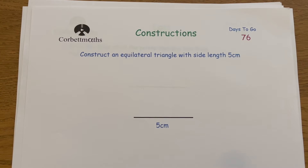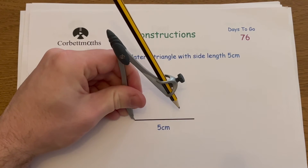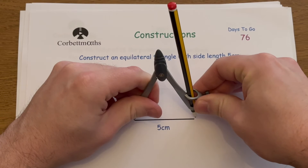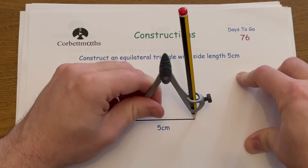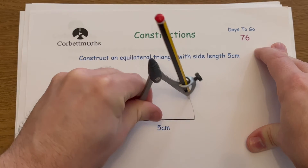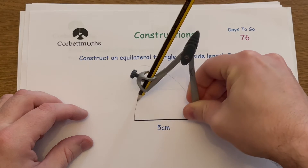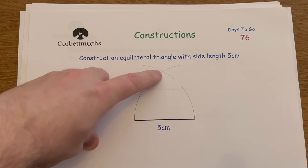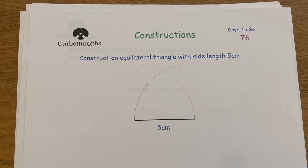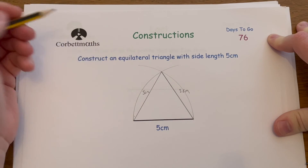This next construction is constructing an equilateral triangle with a side length of five centimeters. A five-centimeter line has been drawn for us. Set the compass so the point is on one end and the pencil on the other — that's five centimeters. Draw an arc above the line. Then move the compass to the other end and draw another arc. Those arcs intersect at a point that is five centimeters from both ends. Join up the vertices and you have an equilateral triangle — all sides five centimeters, all angles 60 degrees.